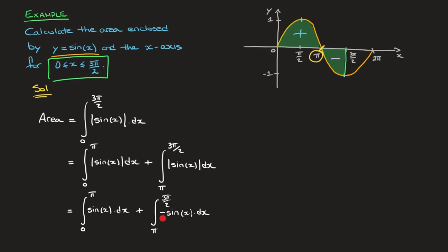Taking the negative outside the integral, the area equals the integral from 0 to pi of sine of x minus the integral from pi to 3 pi over 2 of sine of x. It's worth noting that what this absolute value actually results in is subtracting any area underneath the x-axis. Keeping that in mind, we could have gone straight from the initial sketch to this result — all we need to remember is that area underneath the x-axis must be subtracted.